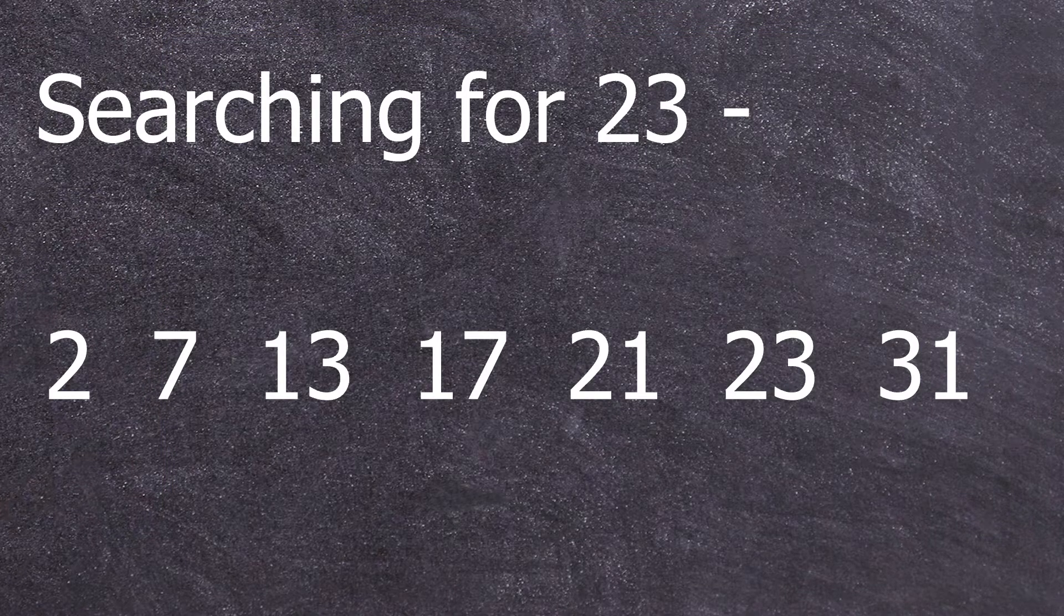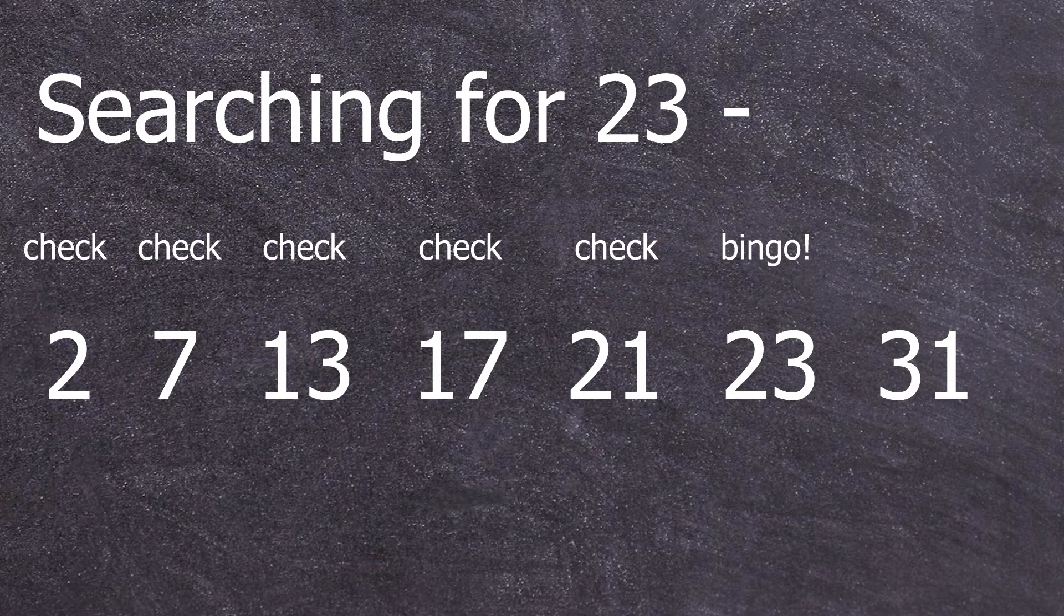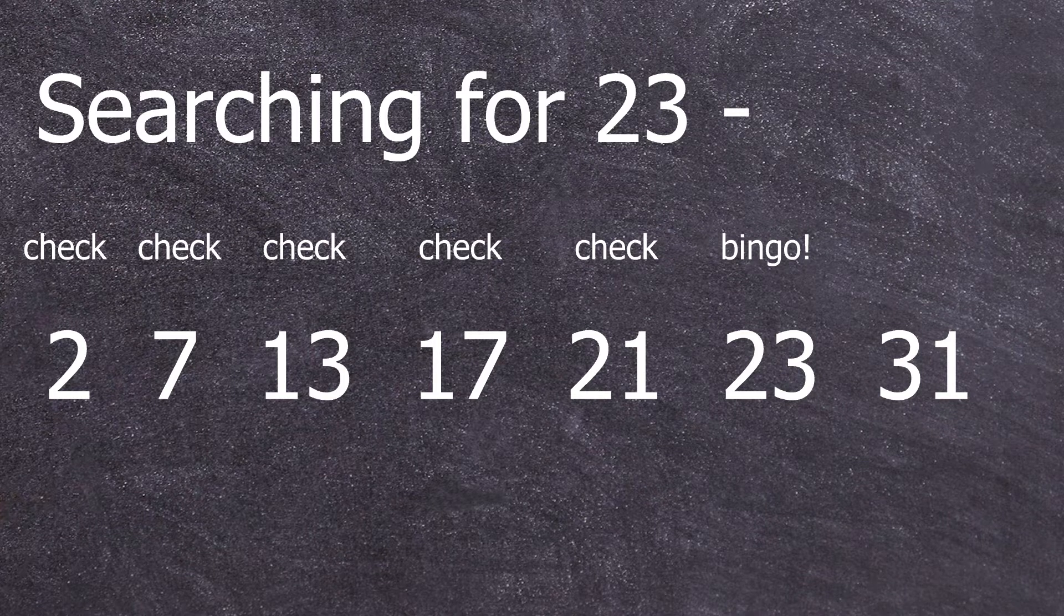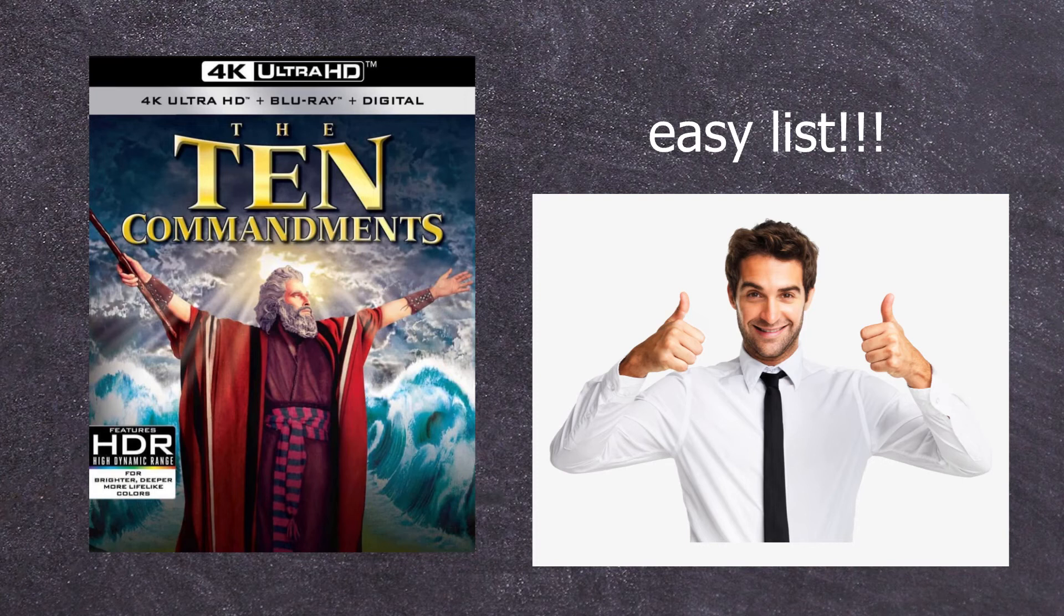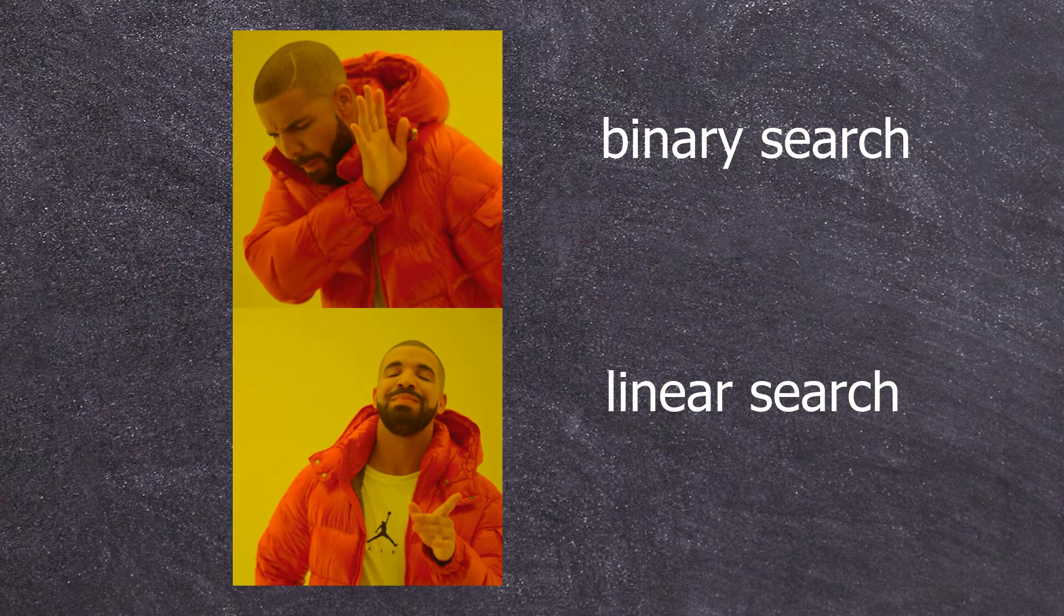This algorithm checks each item in the list in turn until it finds the item it is looking for. It is designed for searching in an unordered list and is very simplistic, however, this makes it very inefficient when searching in large lists and so it should only be used on smaller lists where a more complex search algorithm such as binary would be a waste of time.